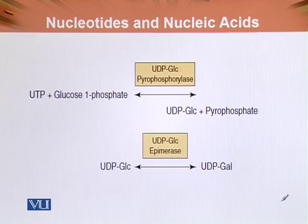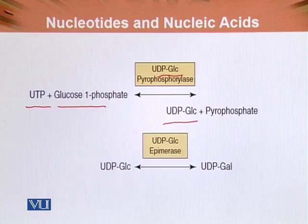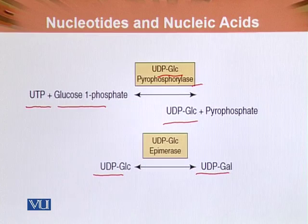This is the diagrammatic presentation. We can see that UDP-glucose and UTP plus glucose-1-phosphate are inter-convertible by the enzyme UDP-glucose pyrophosphorylase. Similarly, UDP-galactose is inter-convertible with UDP-glucose, and UDP-glucose is regenerated from UDP-galactose.